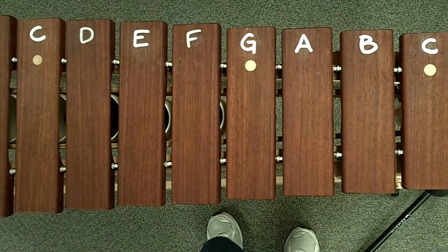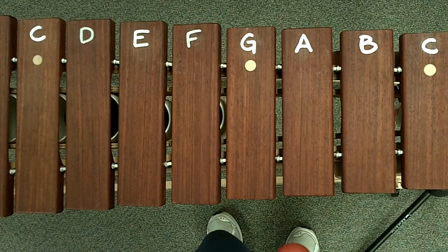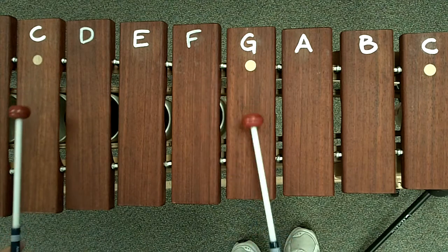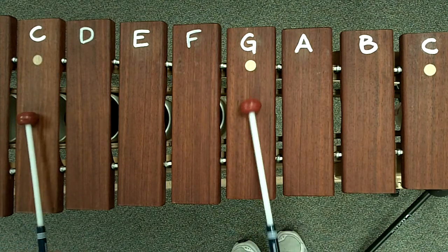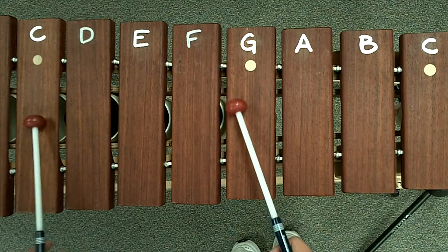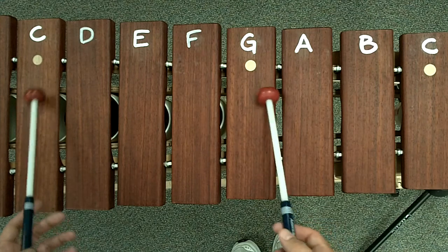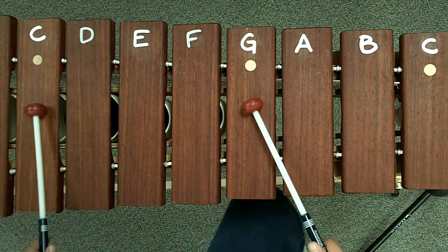Okay, this is the soprano part for Imbube. You're going to start off with C and G, and you're going to do a modified version of it for now.